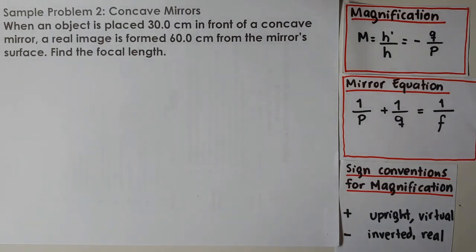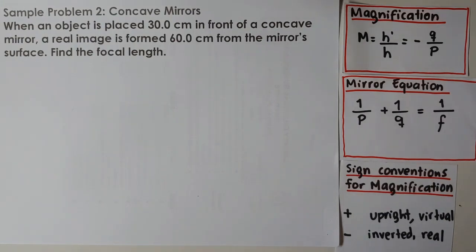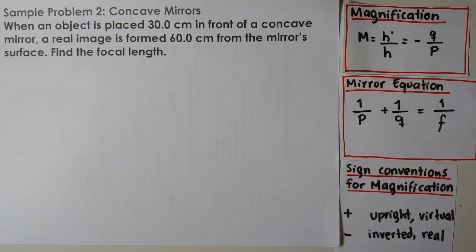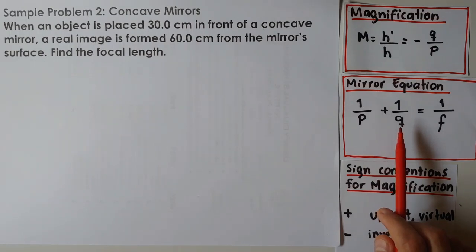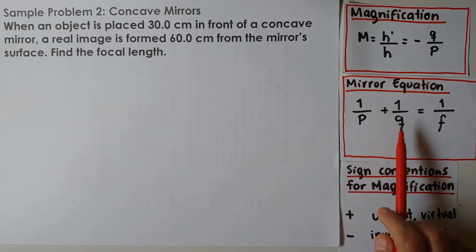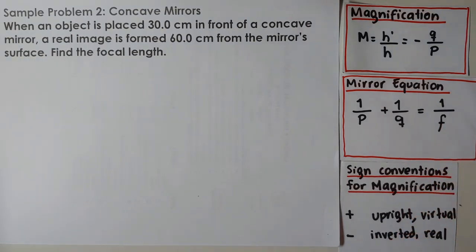Good morning guys. This time we're going to talk about concave mirrors. For this sample problem we have these two equations. This is magnification — that means how the image is going to be seen in the mirror — and this is what we know as the mirror equation. P is the distance from the object, Q is the image distance, and F is the focal length.